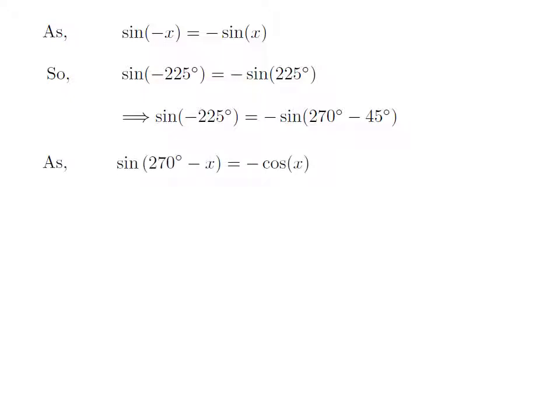As we know, the trigonometry identity sine of 270 degrees minus x is equal to minus cosine of x. The video explaining how to derive this identity is appearing in the upper right corner, and the URL address of the video has been mentioned in the description section.